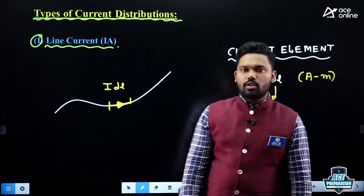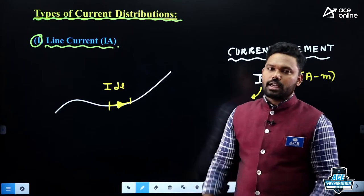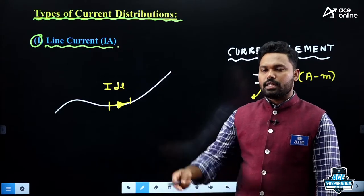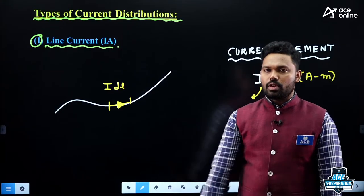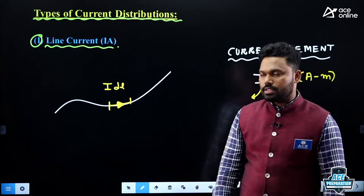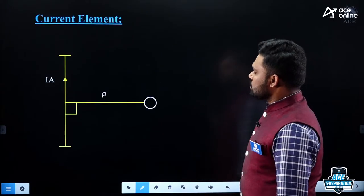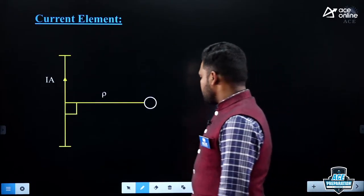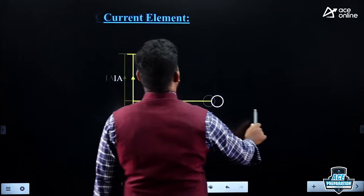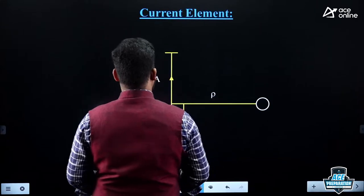Now we will take different conductor shapes: finite length current-carrying conductor, infinite length current-carrying conductor, and circular loop — and find their corresponding magnetic fields. These are the different types of current configurations. We will now see the formulas which are extremely important for our exam.